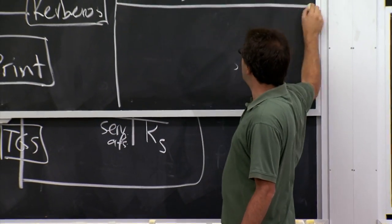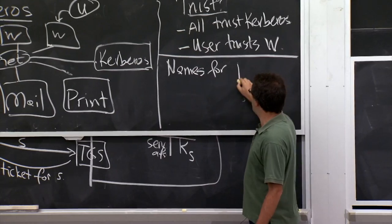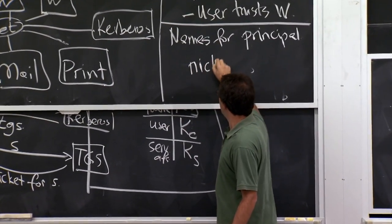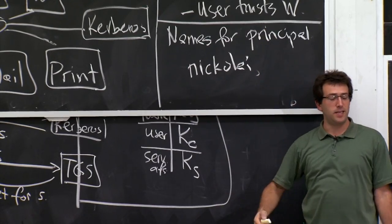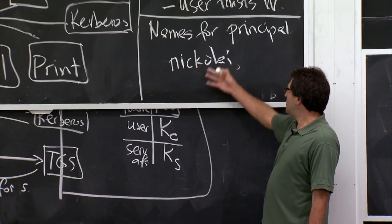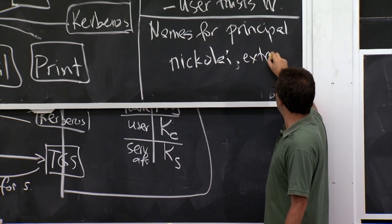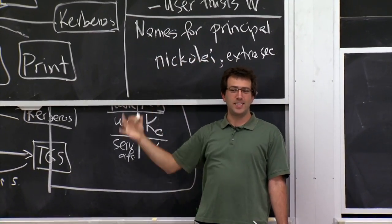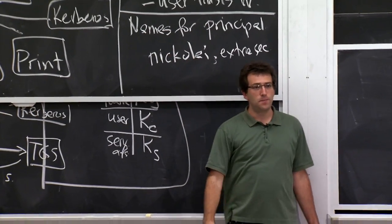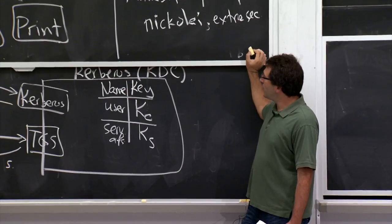In Kerberos, every entity in the database is called a principal, which is just a string — for example, 'Nikolai'. There are also instances that the protocol supports, such as 'Nikolai.extrasecure', which might represent a different entity for machines the user really cares about, potentially with a different password for more secure access versus a regular account.